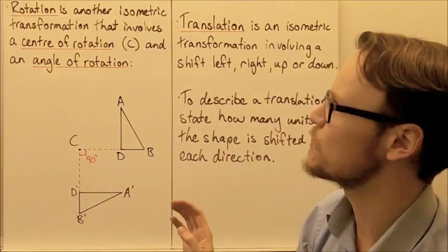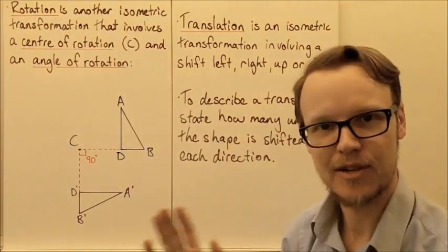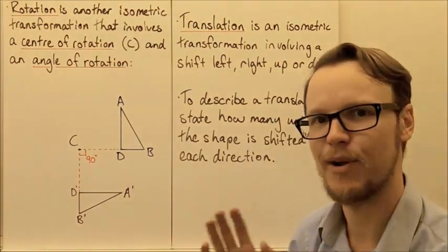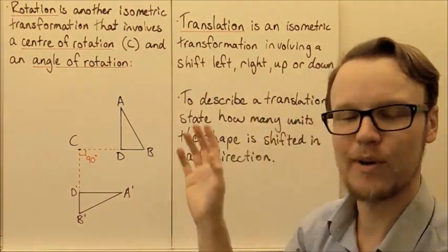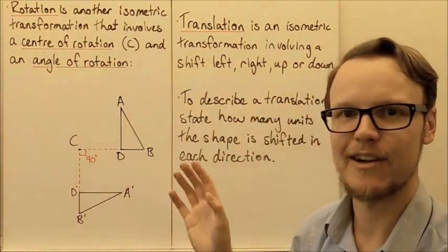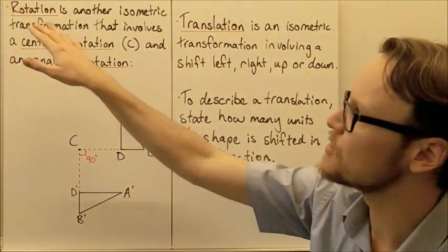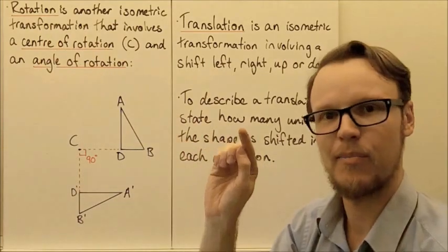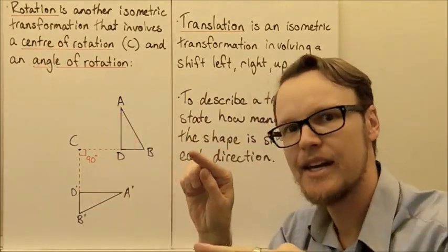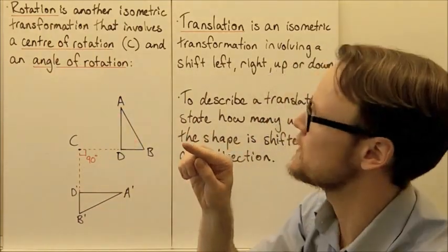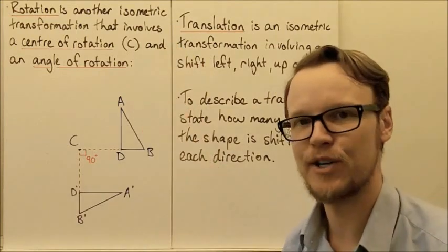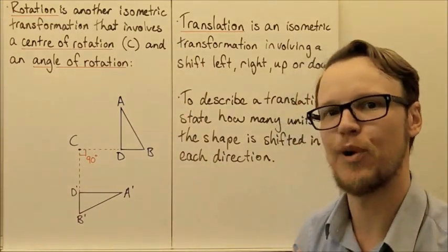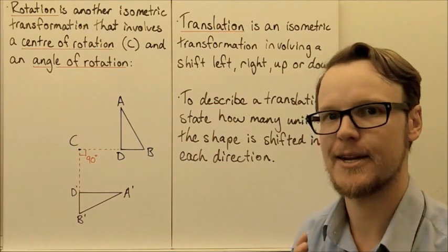Another isometric transformation is rotation. An isometric transformation just means we're moving it around, rotating it, flipping it, but we're not actually going to change the shape in any way. Rotation involves the centre of rotation — a point that we rotate our shape around — and also an angle of rotation that says how much we need to rotate around that centre.